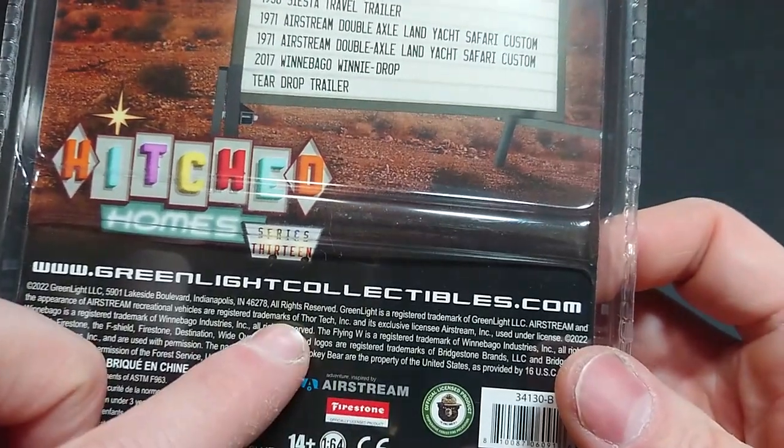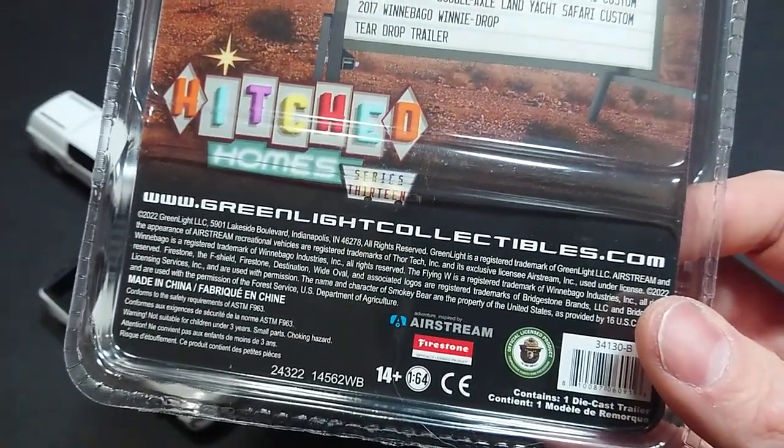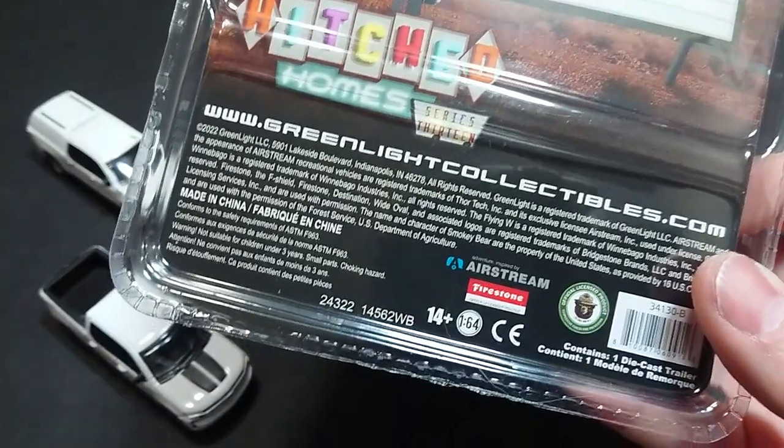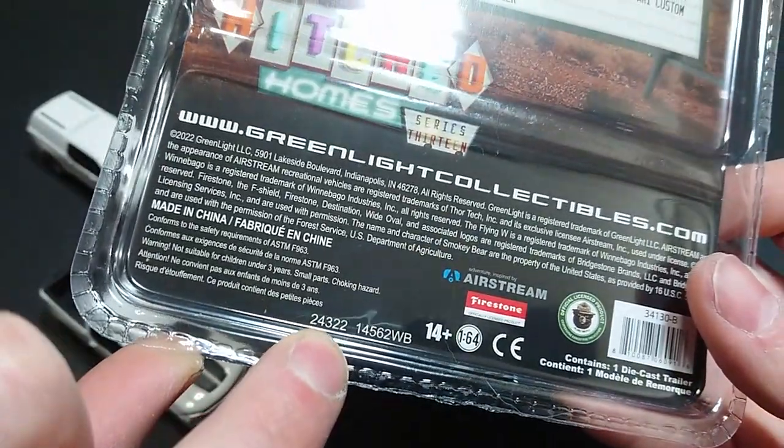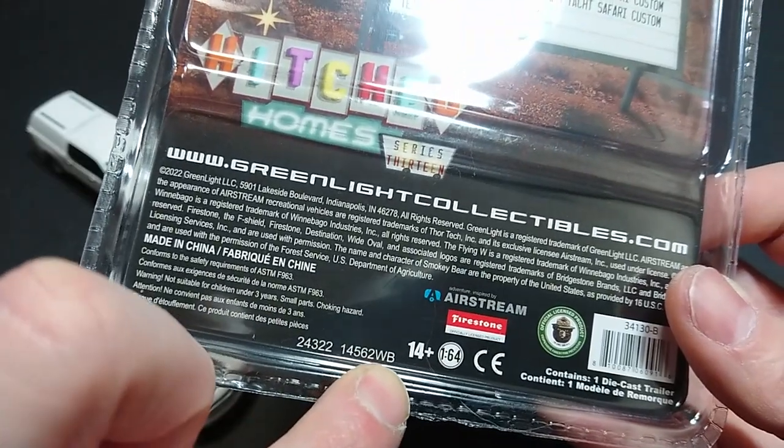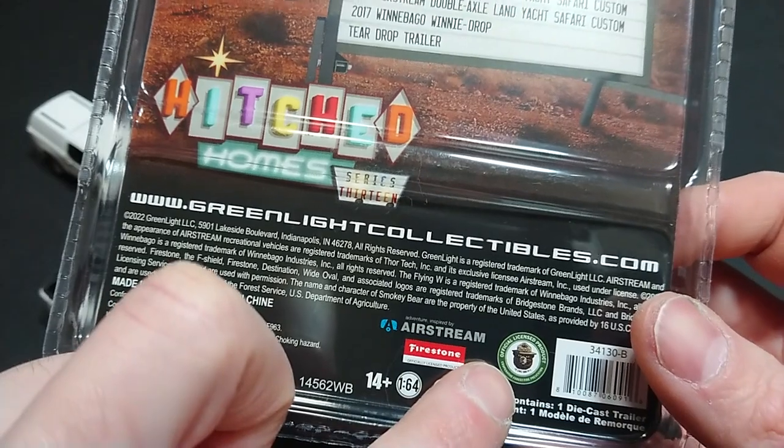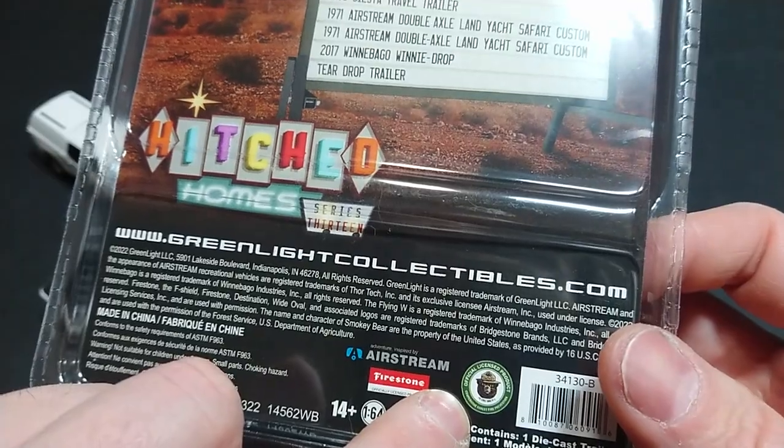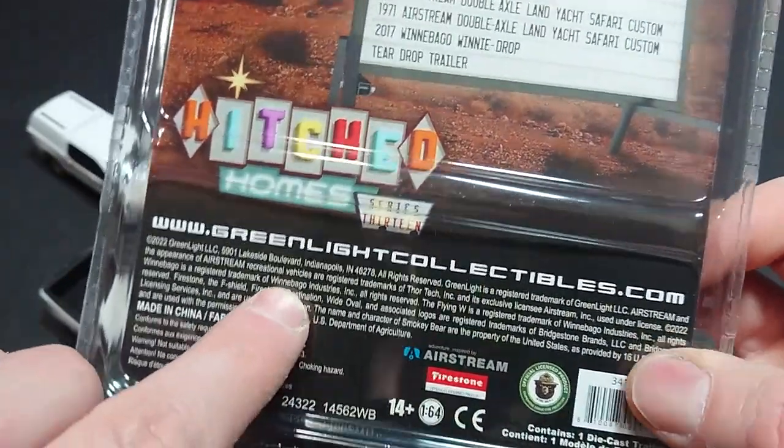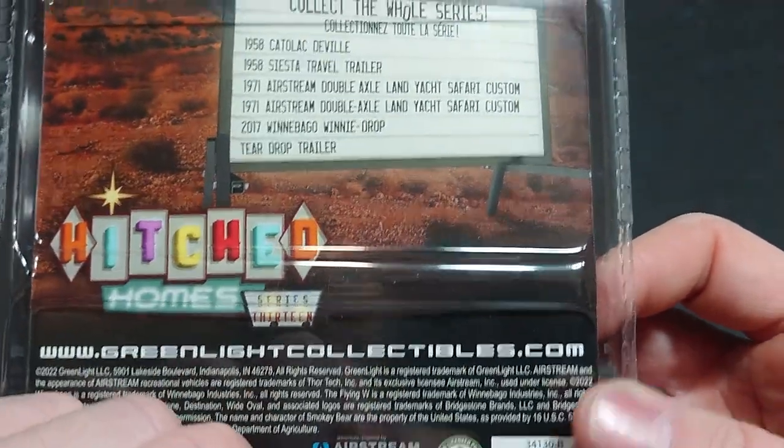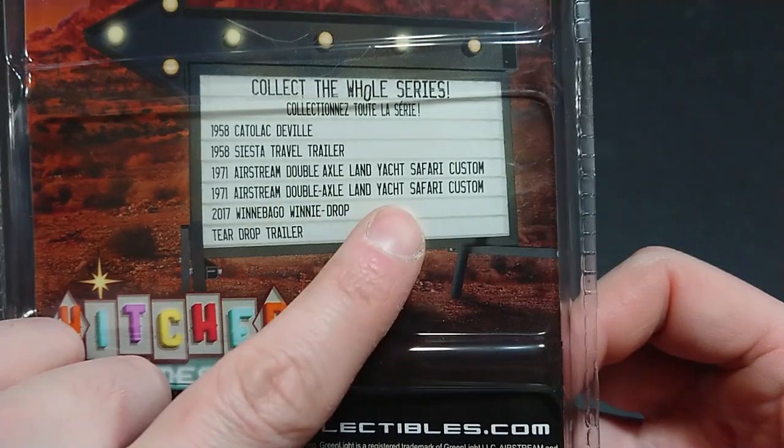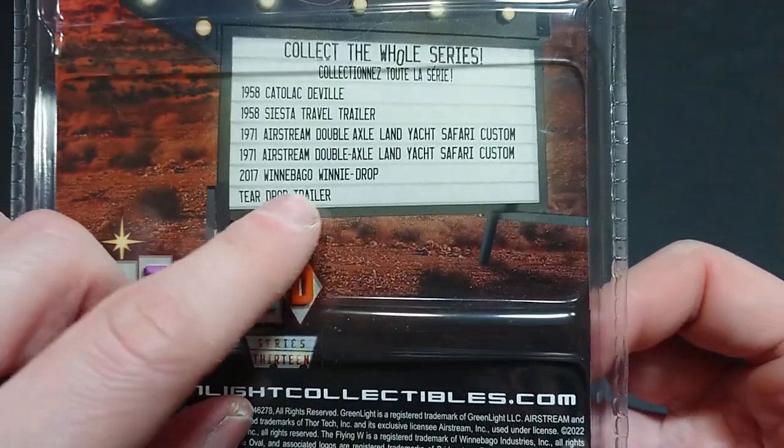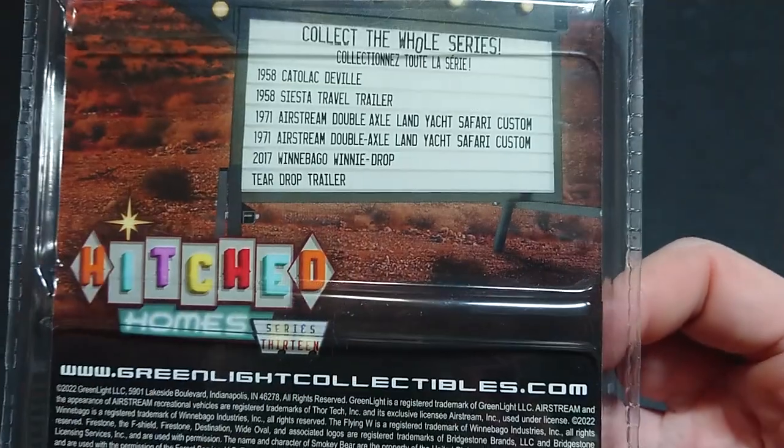I didn't catch this quite on previous model generations. As you know I've done the Airstream Safari one, the huge one that's being towed by that F-350 somewhere here. There's the 243 day of last year when it was made, the 14562WB. We have Firestone for the tires, Airstream, an officially licensed product I believe, cooperative forest fire prevention Smokey the Bear from the US, Winnebago, some other stuff there.